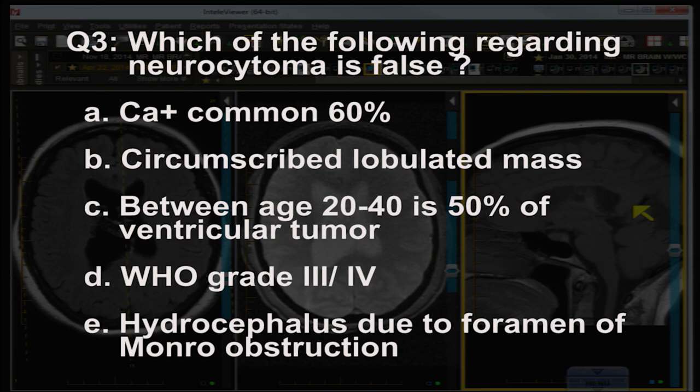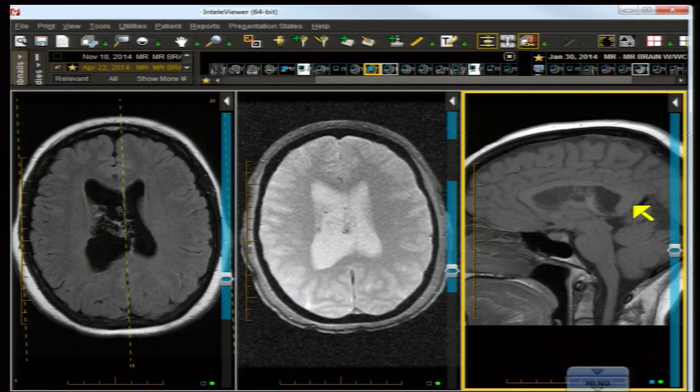Question number three: which of the following regarding neurocytoma is false? A) calcification common 60%; B) circumscribed lobulated mass; C) between the ages of 20 and 40 it accounts for 50% of ventricular tumors; D) World Health Organization grade 3/4; E) hydrocephalus due to foramen of Monroe obstruction.